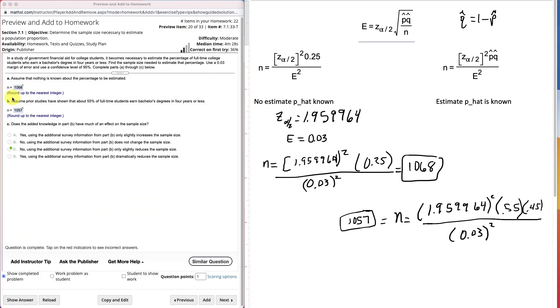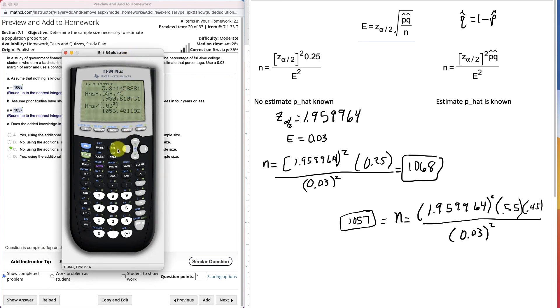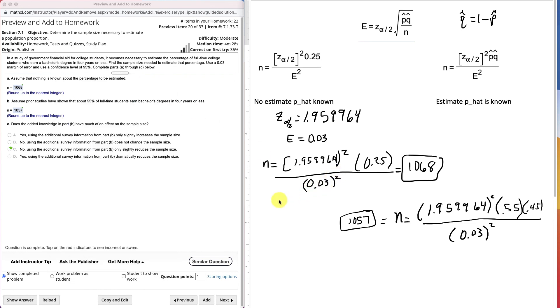We can see that they're not very far away from each other. 11. So the last question here, does the added knowledge of Part B have much of an effect on the sample size? It lowers it knowing our estimate. But no, using the additional survey does not have much effect. It just reduces the sample size slightly. And you can kind of see also if we take a look at like how far did it go down. It went down 11. 11 divided by starting at 1068. It went down 1%.